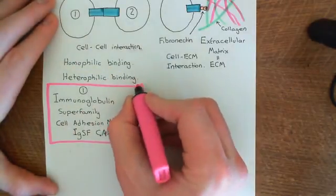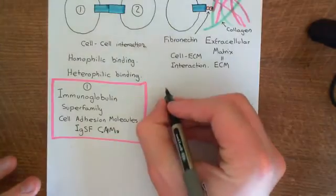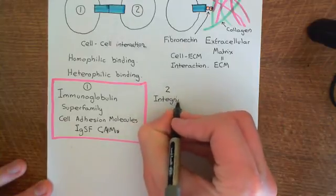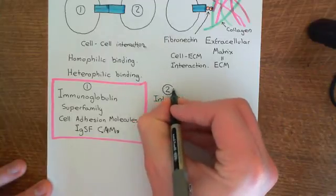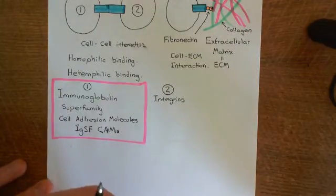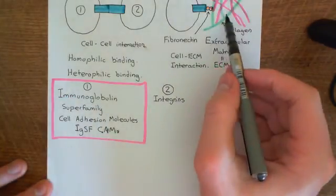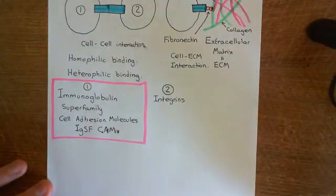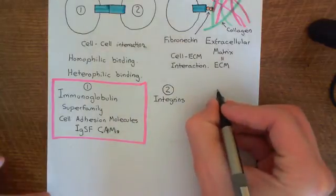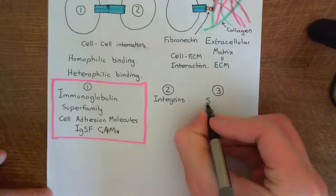Family 2 is the family of integrins — we did a video on those. This includes molecules such as LFA-1 (lymphocyte function-associated antigen 1) and VLA-4 (very late antigen 4). There are also integrins involved in connecting cells to extracellular matrix components, and integrins involved in connecting epithelial cells to basement membranes — basement membranes count as extracellular matrix. So integrins are family 2, and family 3 is the selectins — the star of the show.